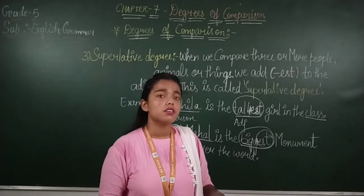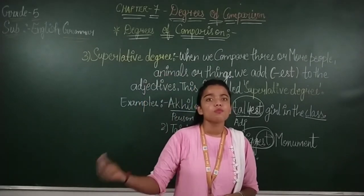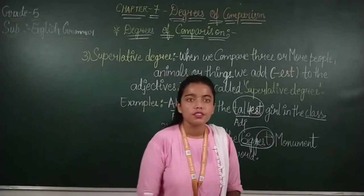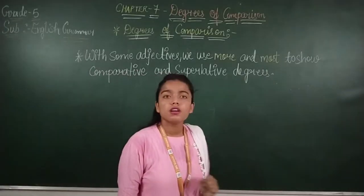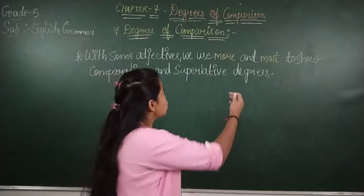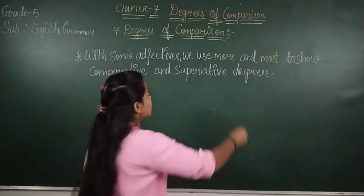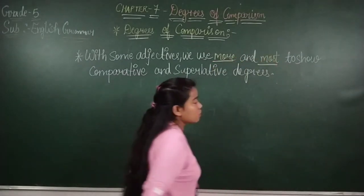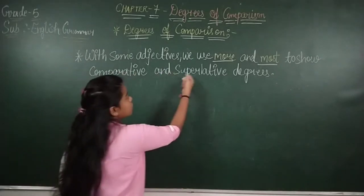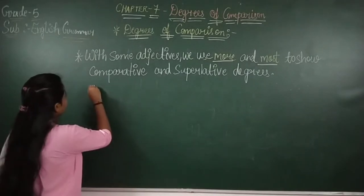Now we will see that with some adjectives we use 'more' or 'most' to show comparative and superlative degrees. Let's see some examples of how it is shown and how we can identify them.